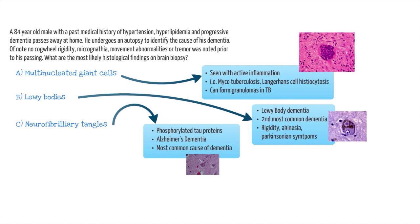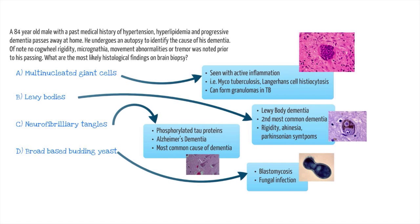In choice D, we have broad-based budding yeast. This description indicates a Blastomyces infection. Blastomycosis infection is unlikely to cause a chronic progressive dementia. The description of how yeast appear microscopically is very important — for example, if a skin biopsy shows spaghetti and meatballs appearance, think Tinea Versicolor; if a fruiting body is present with 45-degree septate hyphae, think Aspergillus. Check out the link in the description below to find a handout about the description of various fungi.